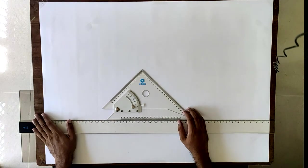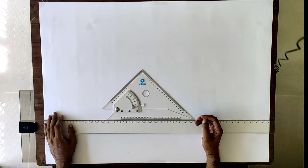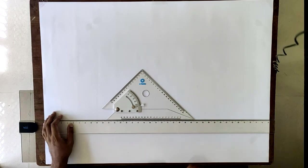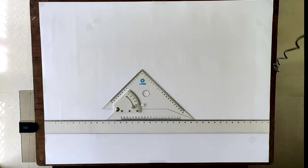We saw how to draw lines with T-scale and set squares, but how will we make sure that it is of the exact length that we need? For that we will be using scale sets.